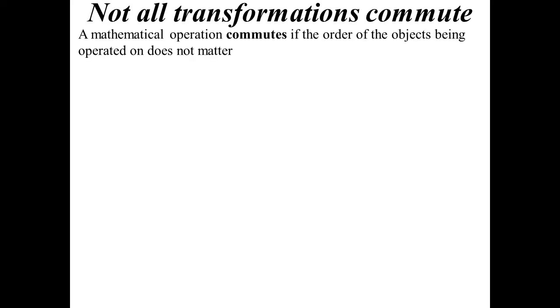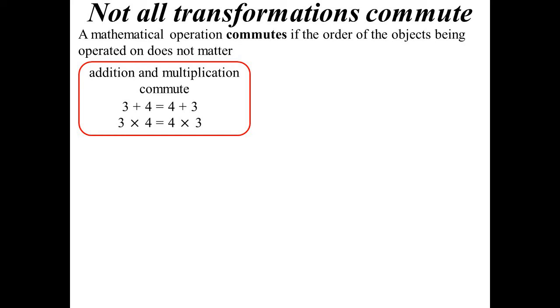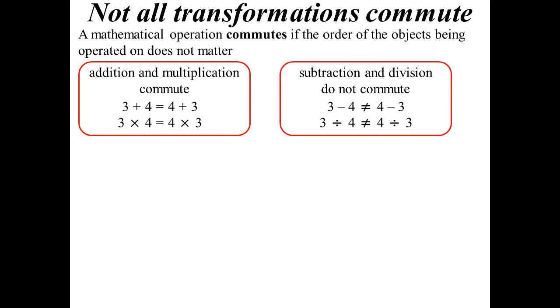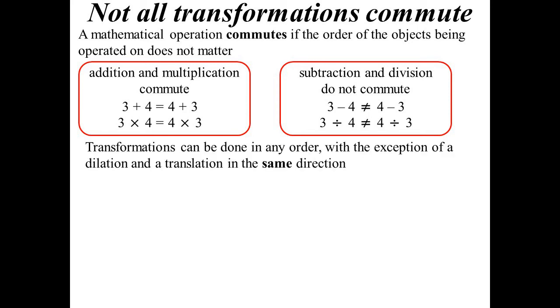Not all transformations commute. What am I talking about with commute? If I just go back to basic operations, commute simply means the order doesn't matter. So addition and multiplication commute. 3 plus 4 is the same as 4 plus 3. 3 times 4 is the same as 4 times 3. However, subtraction and division do not commute. 3 minus 4 is not the same as 4 minus 3. 3 divided by 4 is not the same as 4 divided by 3. So that's what we talk about when we say commute. You can do it in either order.